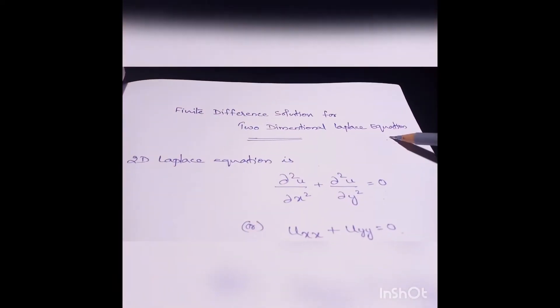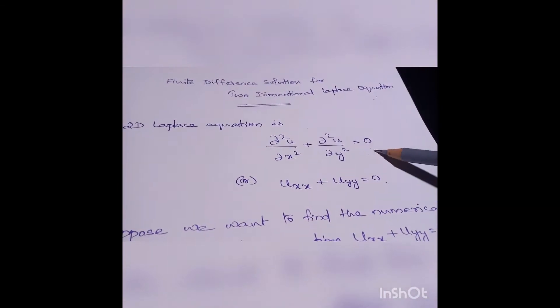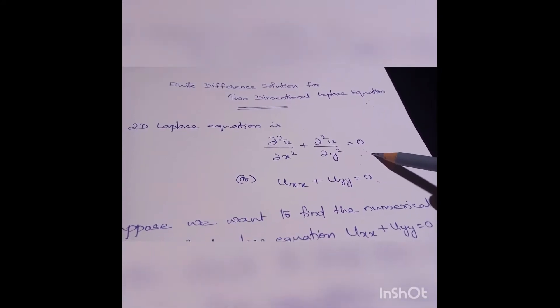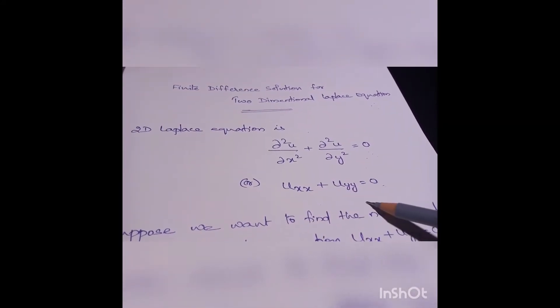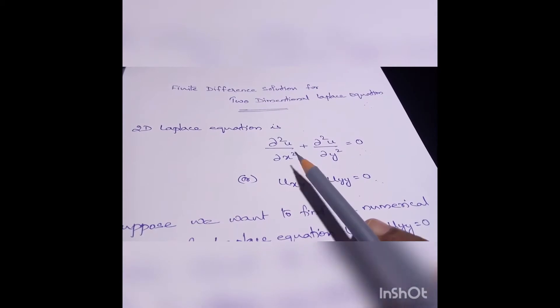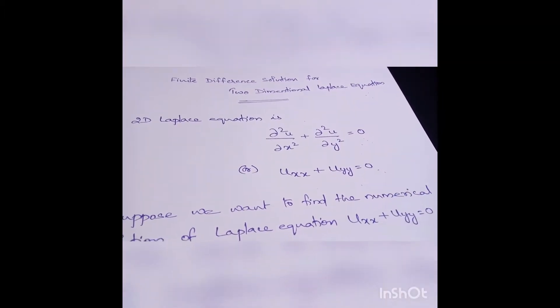Today we are going to learn the finite difference solution for the two-dimensional Laplace equation. The two-dimensional Laplace equation is: ∂²u/∂x² + ∂²u/∂y² = 0, or equivalently, u_xx + u_yy = 0.